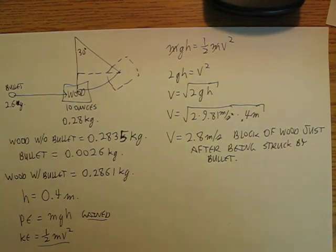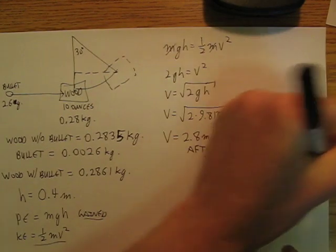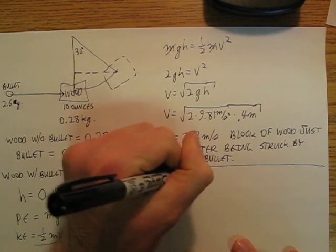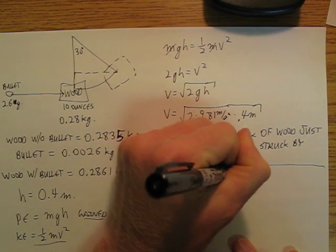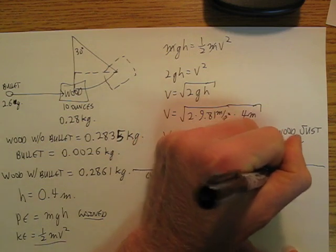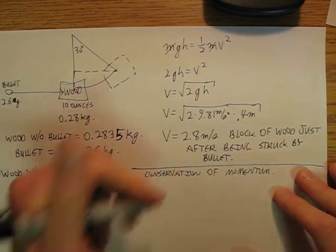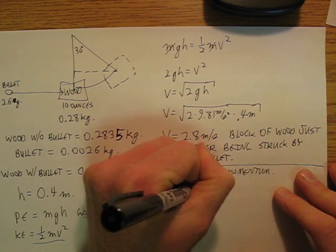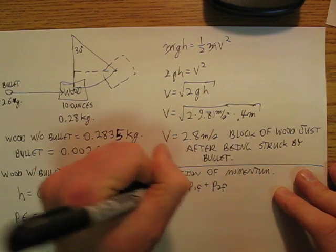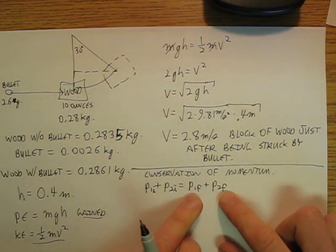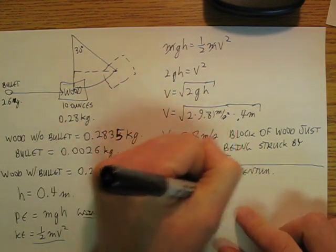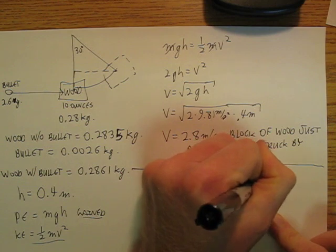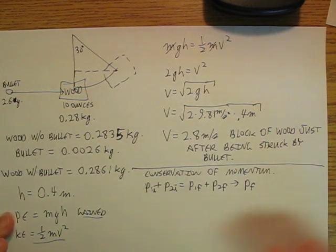So in terms of conservation of momentum, I'm going to say that P1 plus P2 equals P1 final plus P2 final. Now there's only going to be one object at the end, so I'm just going to call that P final because the bullet is going to be inside the block of wood.